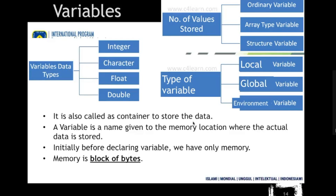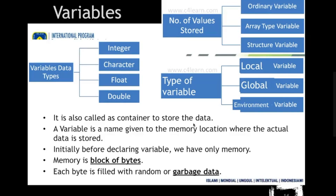That is why variable names are assigned to particular data items. Initially, before declaring a variable, memory is just a block of bytes, and all those bytes in a computer storage system have random values at the beginning. Those random values are called garbage data. So if you have not assigned a value to a variable and something is present there, that is garbage data — it is not your data, it is random, dirty data.